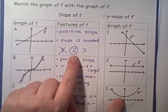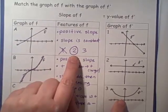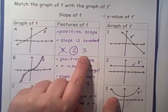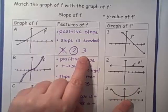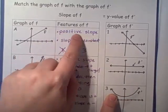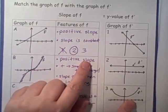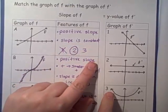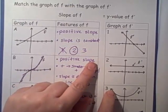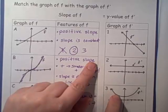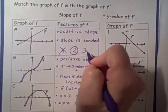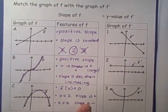Let's see why A won't go with graph 3. The y-values are always positive for graph 3, that's true. But the y-values are not constant — over here they're decreasing, and over here they're increasing. So graph 3 won't work for A.